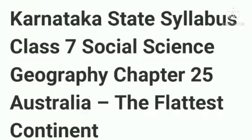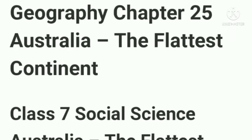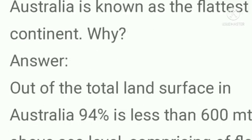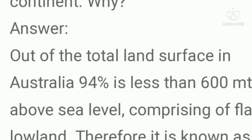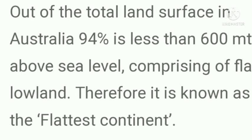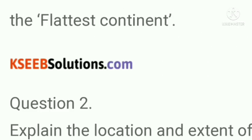Hello everyone, welcome back. In this video we are going to study the notes of Karnataka State Syllabus Class 7 Social Science Geography Chapter 25: Australia - The Flattest Continent. Question number one: Australia is known as the flattest continent. Why? Answer: Out of the total land surface in Australia, 94 percent is less than 600 meters above sea level, comprising flat lowland. Therefore it is known as the flattest continent.